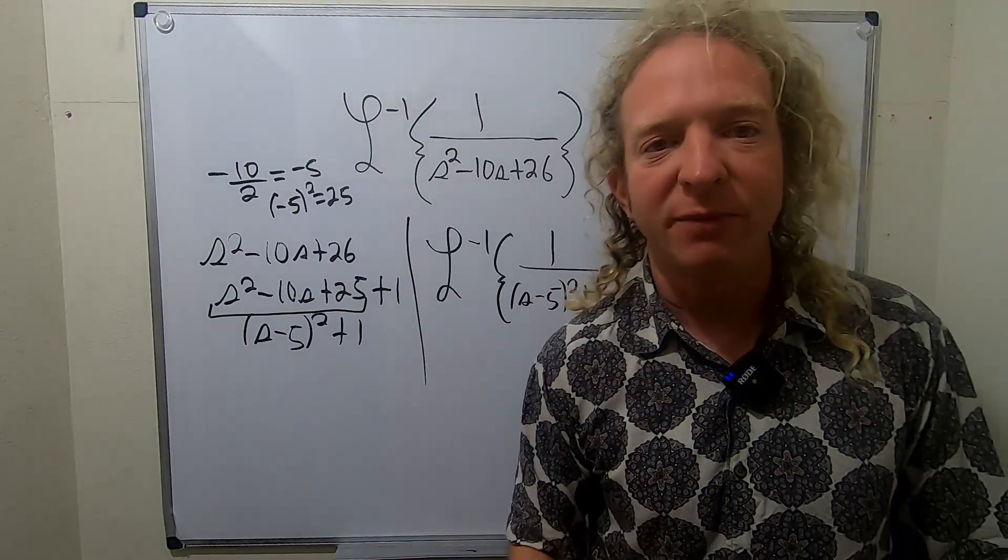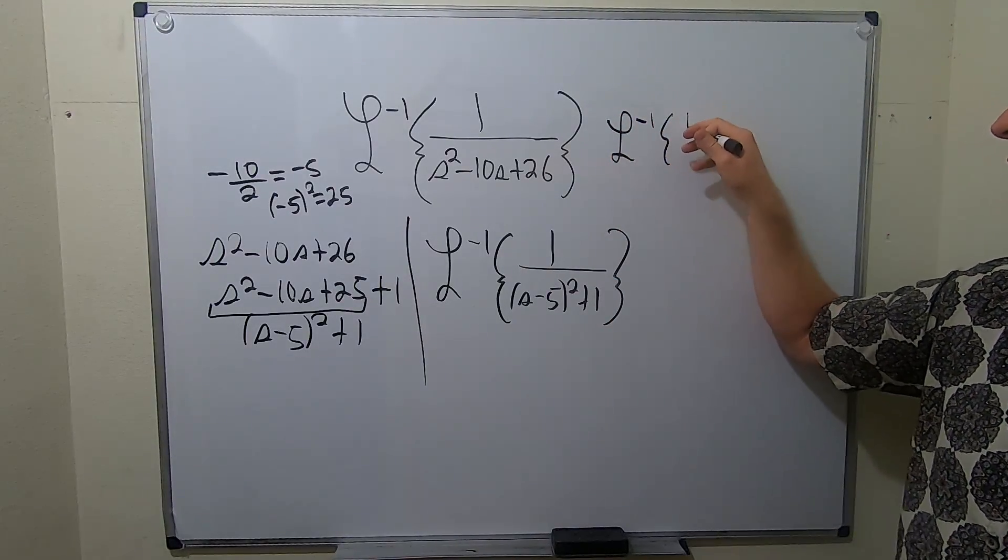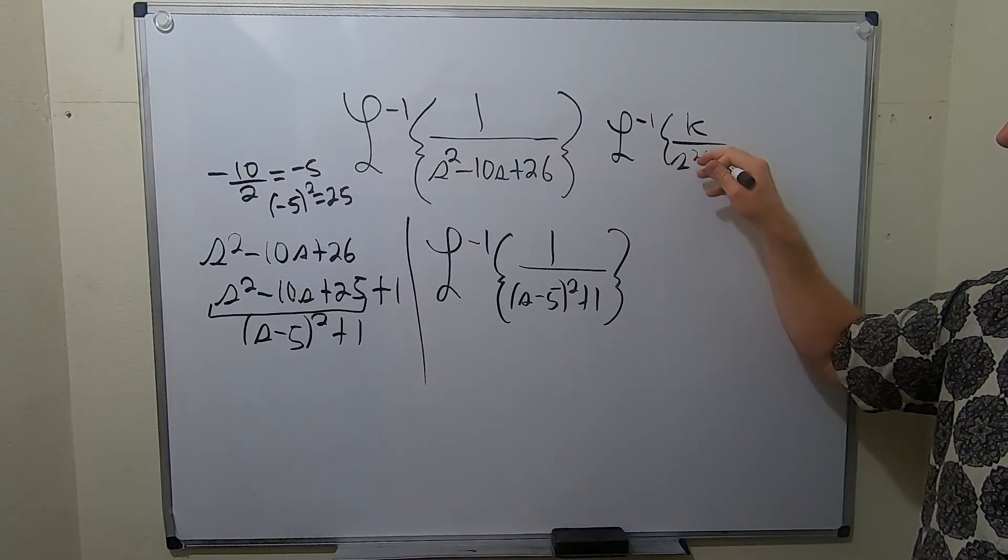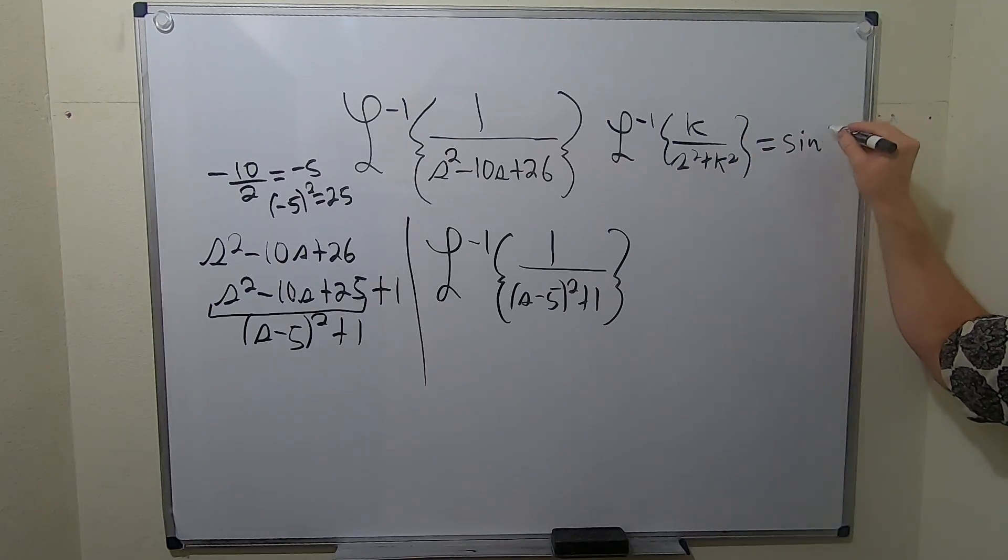So this is almost like a sine. And I say, what's a sine? What do you mean? The inverse Laplace of k over s squared plus k squared. This formula gives you the sine of kt. I don't know if you remember that.